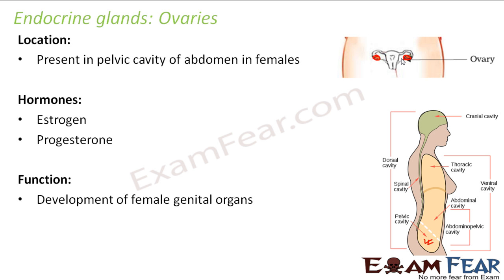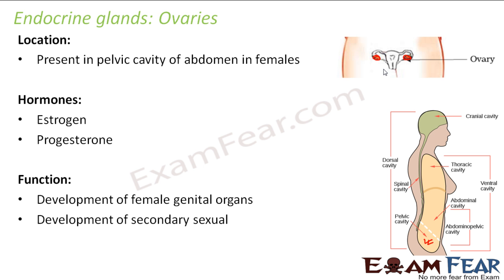When we say female genital organs, we are talking about the female reproductive organs. Here we have the ovaries, the tube-like structures connecting the ovaries which are the fallopian tubes, then we have the uterus, the cervix, and the opening called the vagina. All of these together form the reproductive system in females, and these hormones help in the development of these female genital organs.